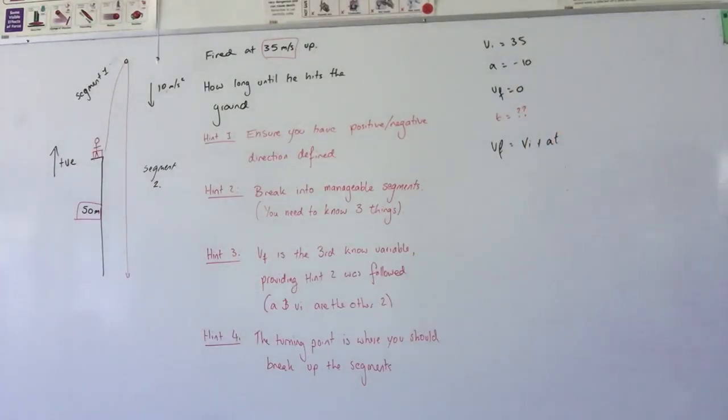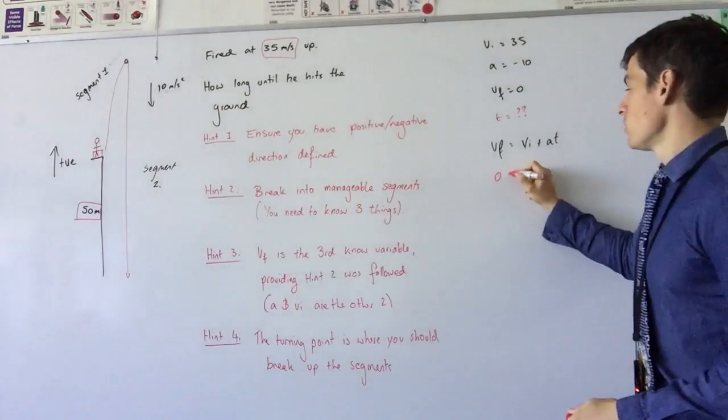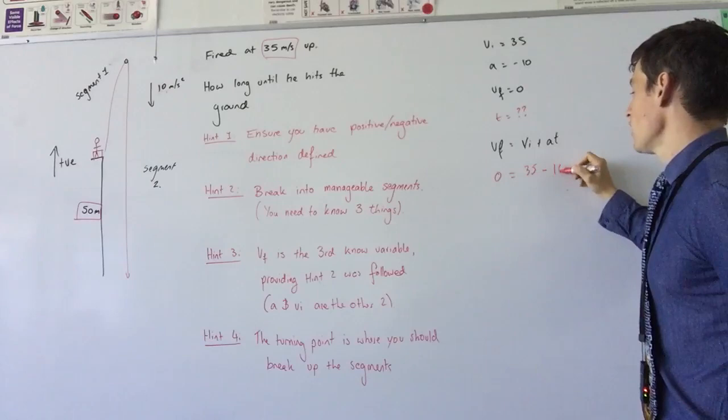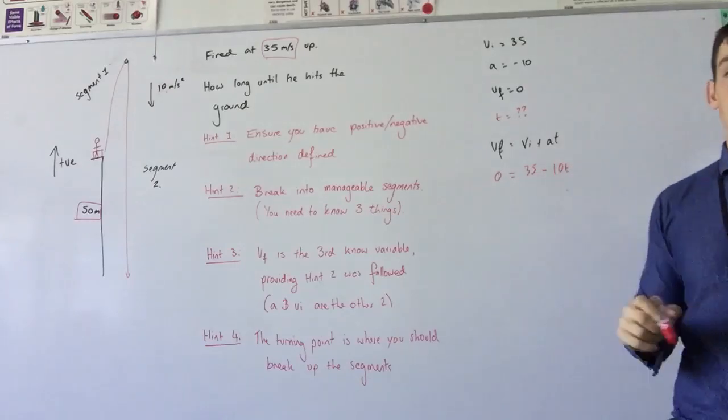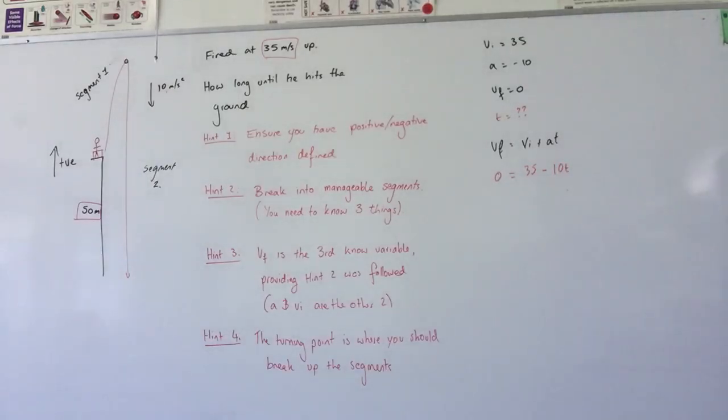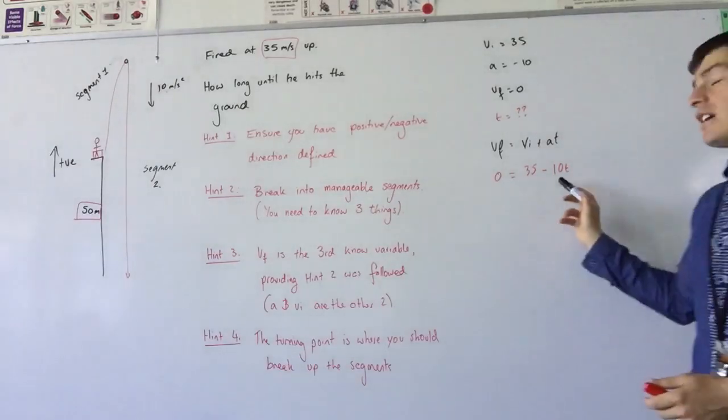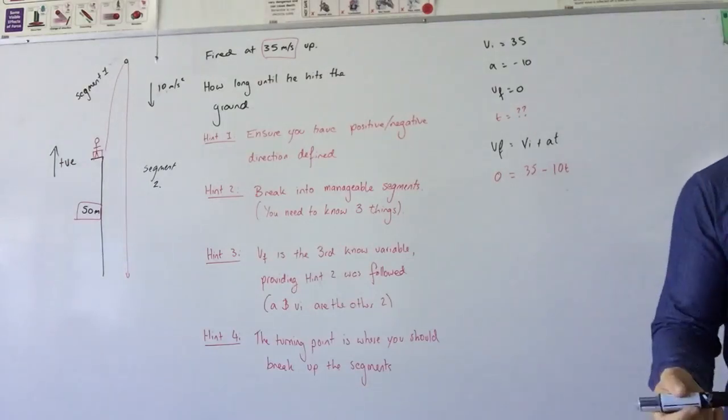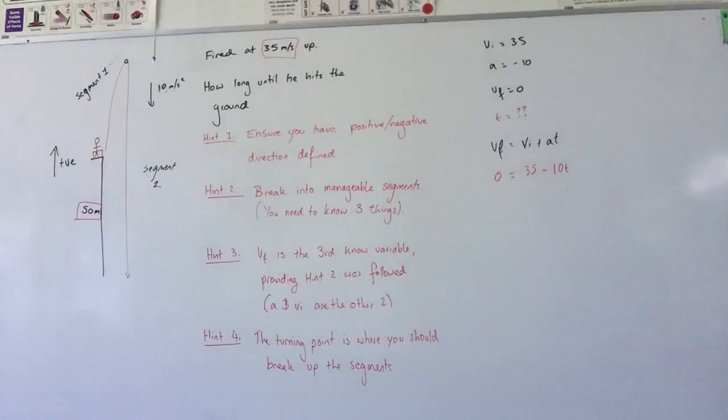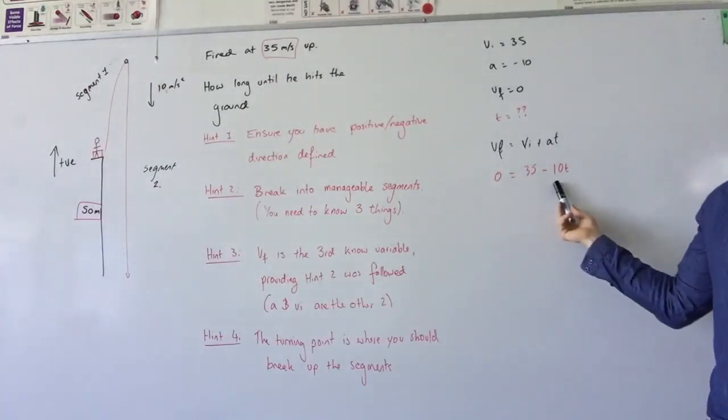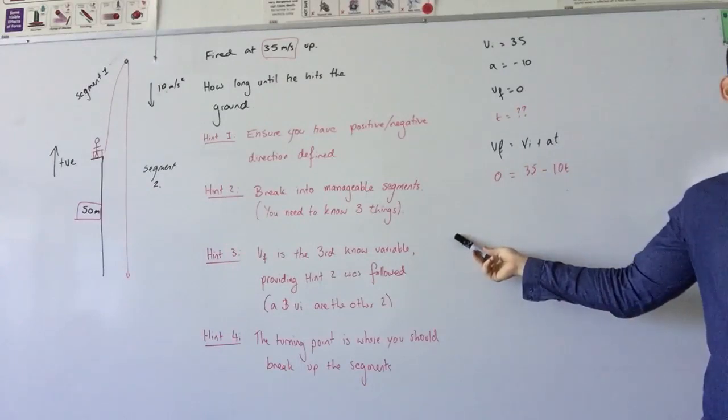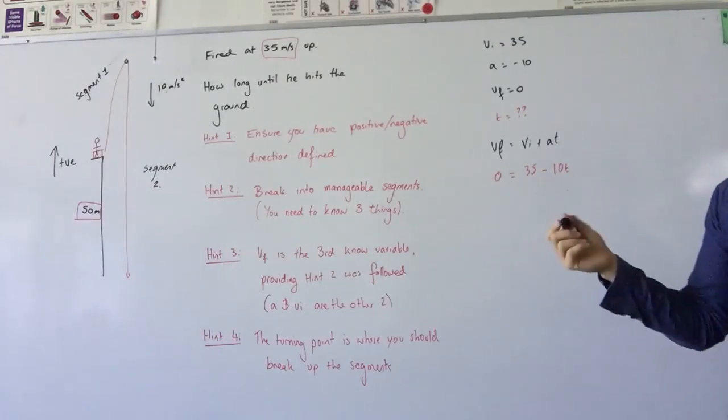What's my value for VF? Zero. What's your value for VI? 35. What's my value for acceleration? Negative 10. That's important because I heard some people saying I'm getting a negative value. You're getting a negative value because you haven't identified your positives and negatives correctly. Let's say I'd made down positive. I'd have negative 35 equals 10T.